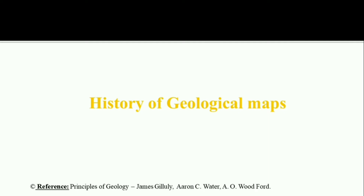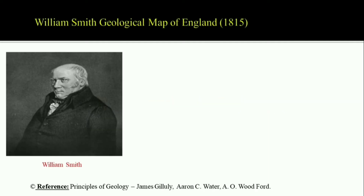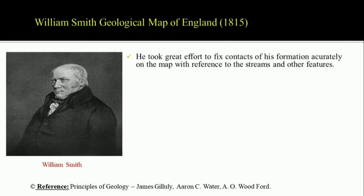Before entering into maps, let us look at the history of geological maps. Mr. William Smith published a geological map of England in 1815, and that is considered to be the greatest work of all time. Even before him, there were many maps published, but the main difference is that he worked for almost 24 years and created a map which shows a proper boundary between different rock units. Before that, geological maps simply mentioned some rock types at scattered points — sandstone here, some other rock type there — but William Smith put a lot of effort to fix the boundary between the different formations.